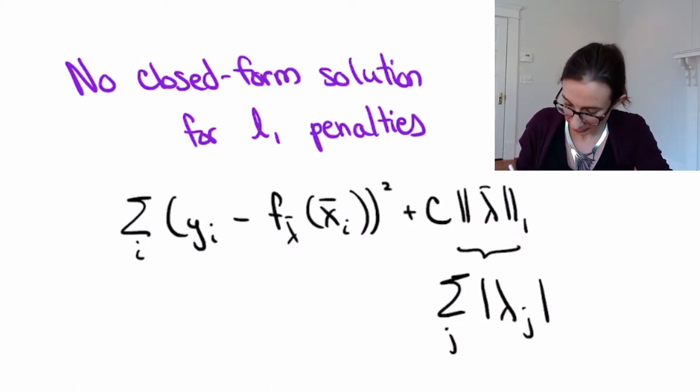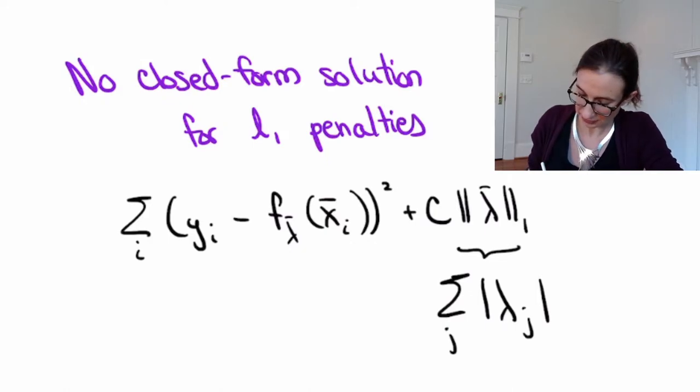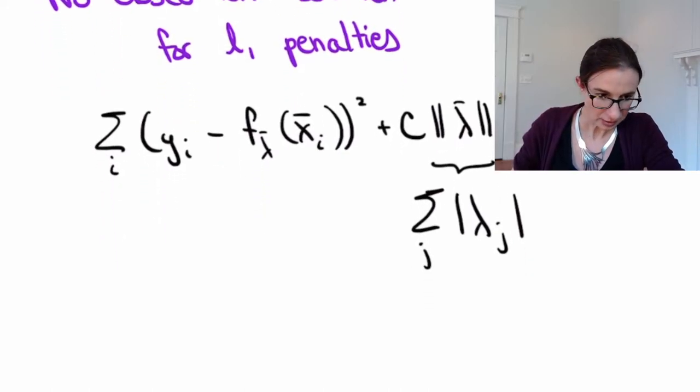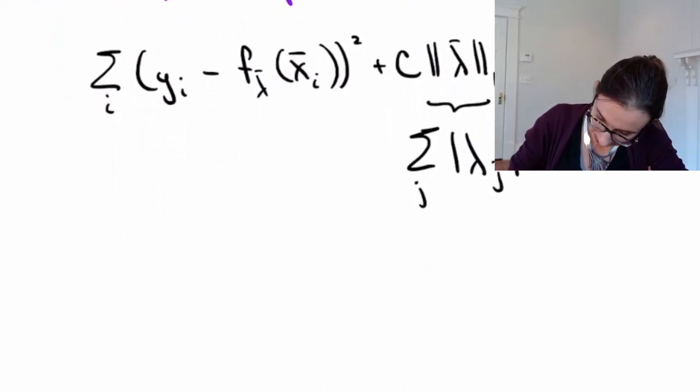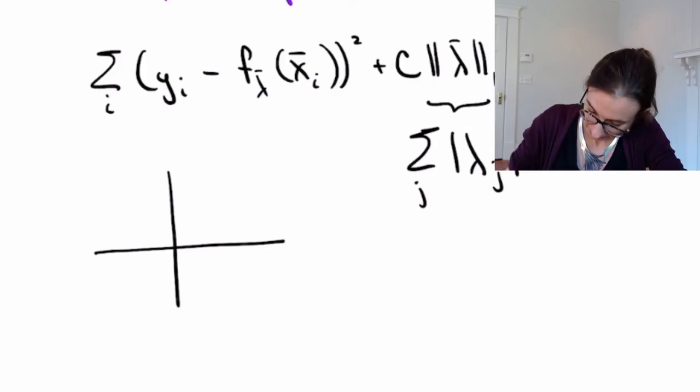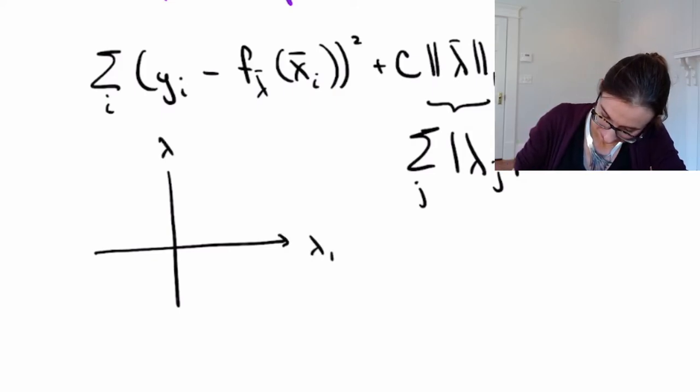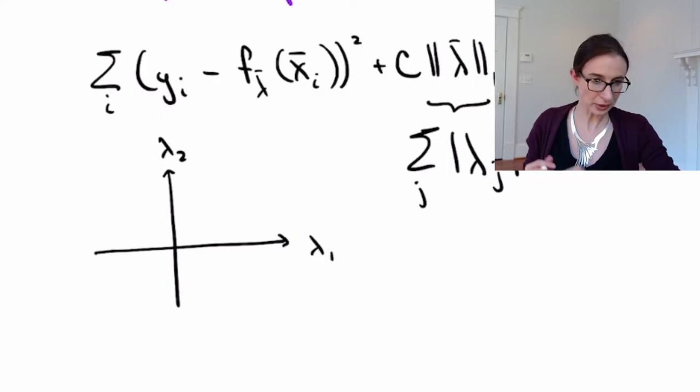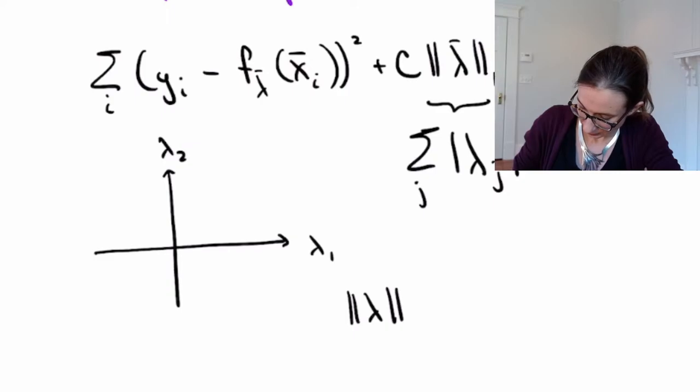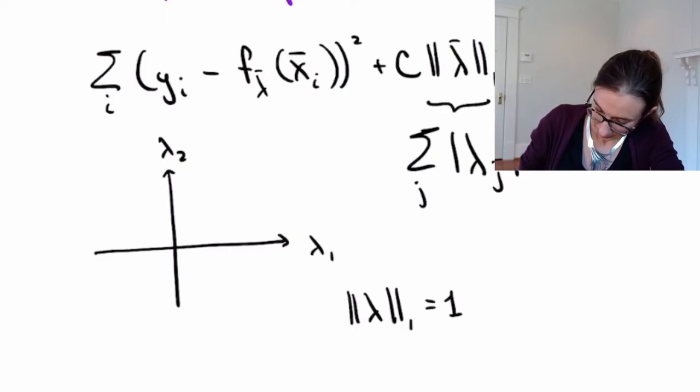Okay, so let's think about what the level sets of the L1 norm are. So I'm just going to draw a way to visualize L1 norms here on these axes. So I'm just in two dimensions so I have lambda 1 and lambda 2. Okay, so what are the level sets of the L1 norm? Well, I'm just going to plot the set of points where the L1 norm equals 1.